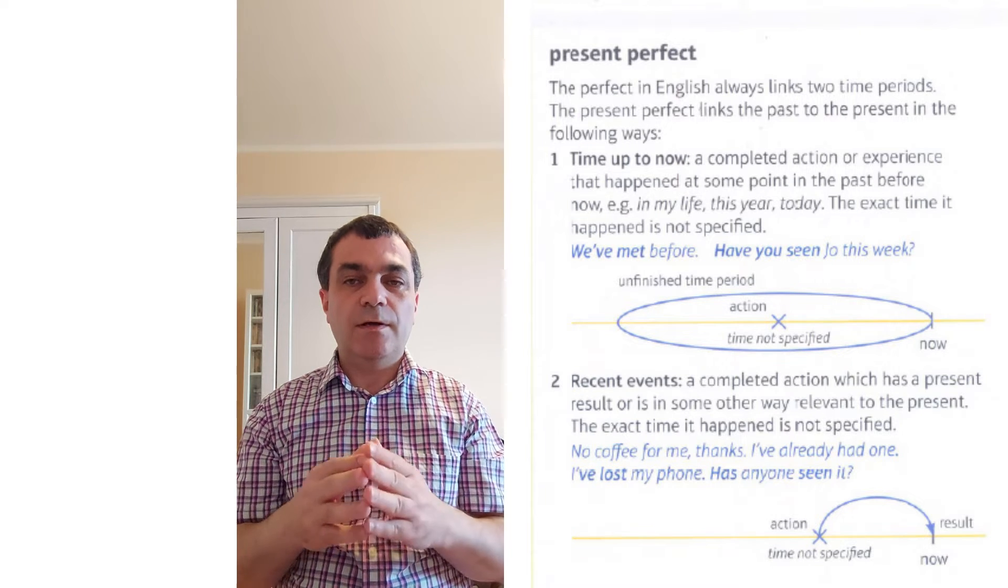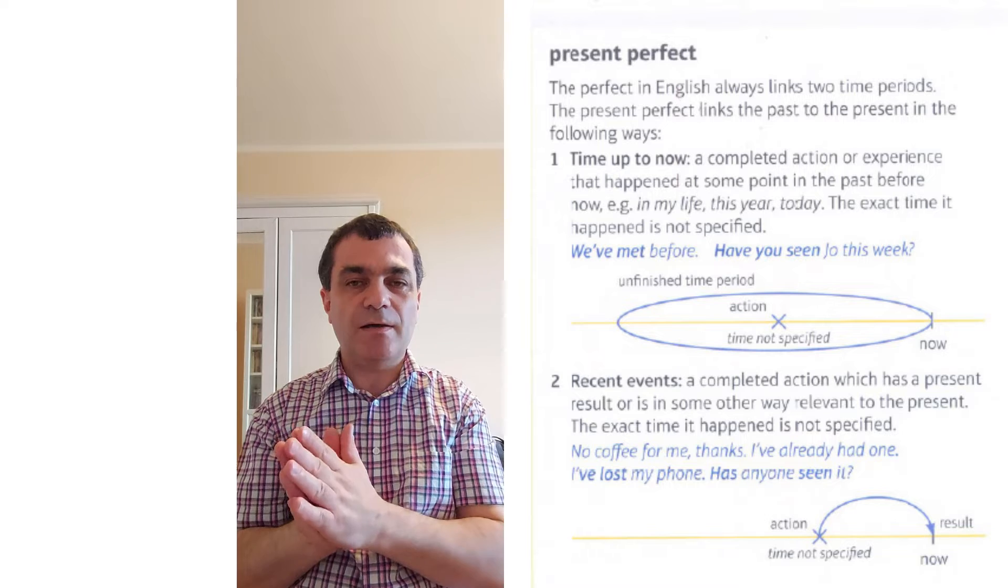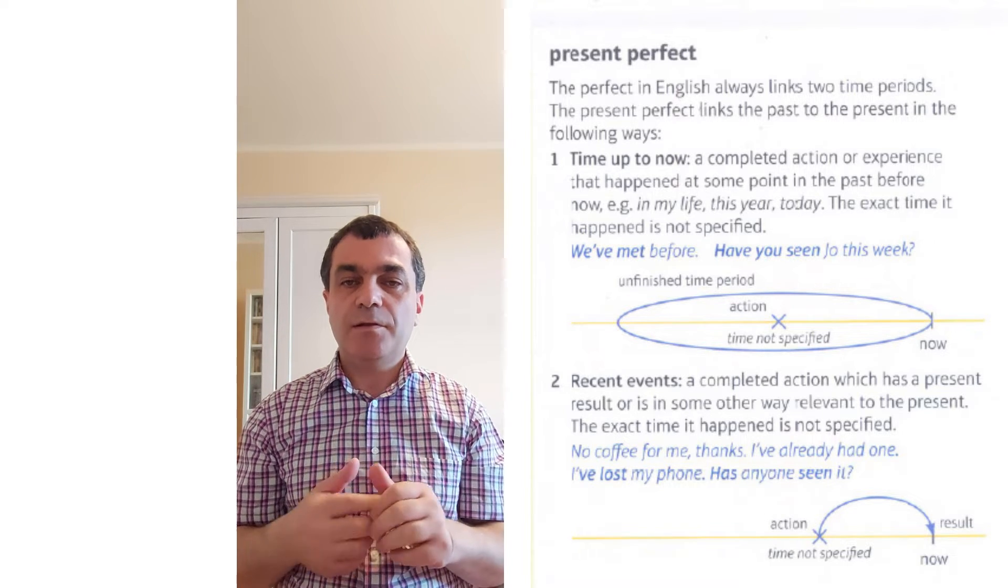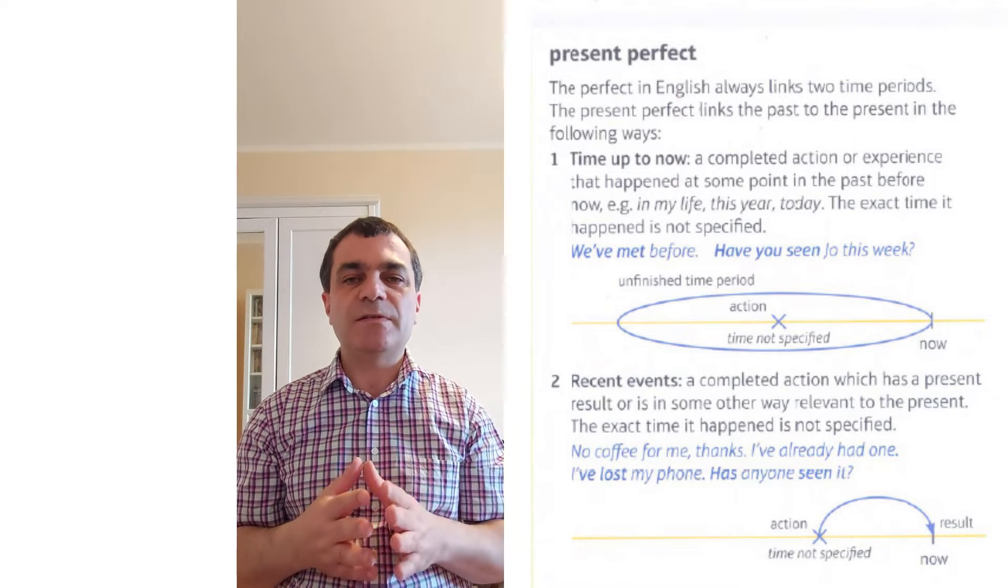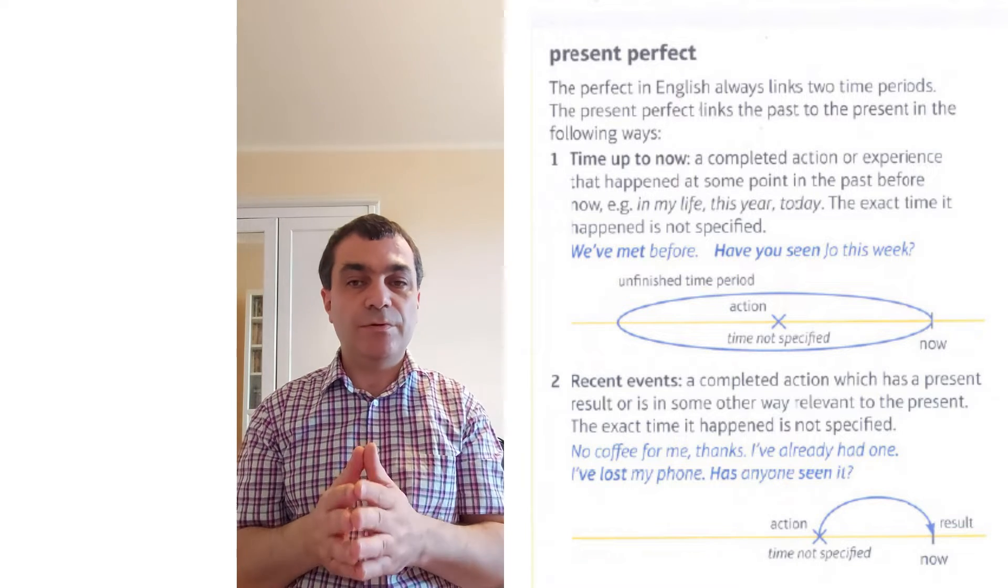Time up to now. A completed action or experience that happened at some point in the past before now. In my life, this year, today. The exact time it happened is not specified. We have met before. Have you seen Joe this week?